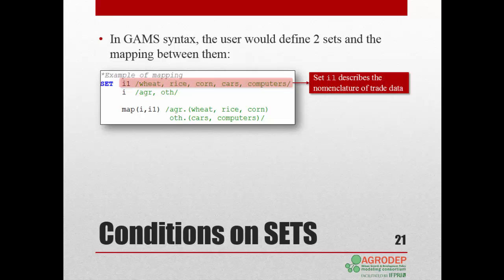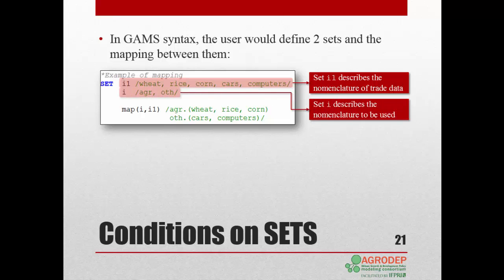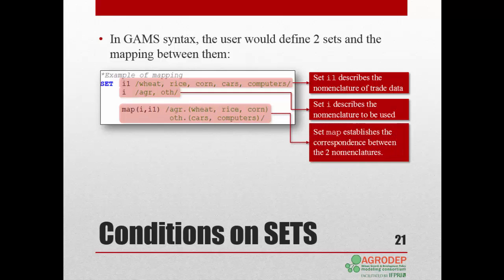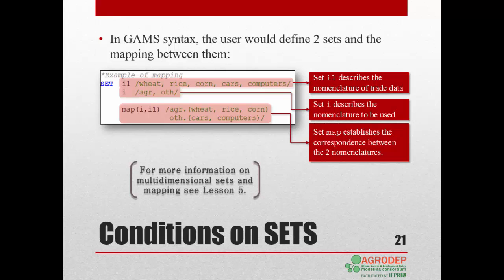So in the first set I1, commodities are listed according to the given nomenclature: wheat, rice, corn, cars, and computers. In the second set I, elements are aggregated according to the user's nomenclature: ag and other. Finally, the subset map establishes the correspondence between the two nomenclatures by mapping elements of I and elements of I1. Note that the elements of I are listed first, followed by the elements of I1, to correspond to the order specified in the subset mapping. For more information on multidimensional sets and mapping, we refer you back to Lesson 5.